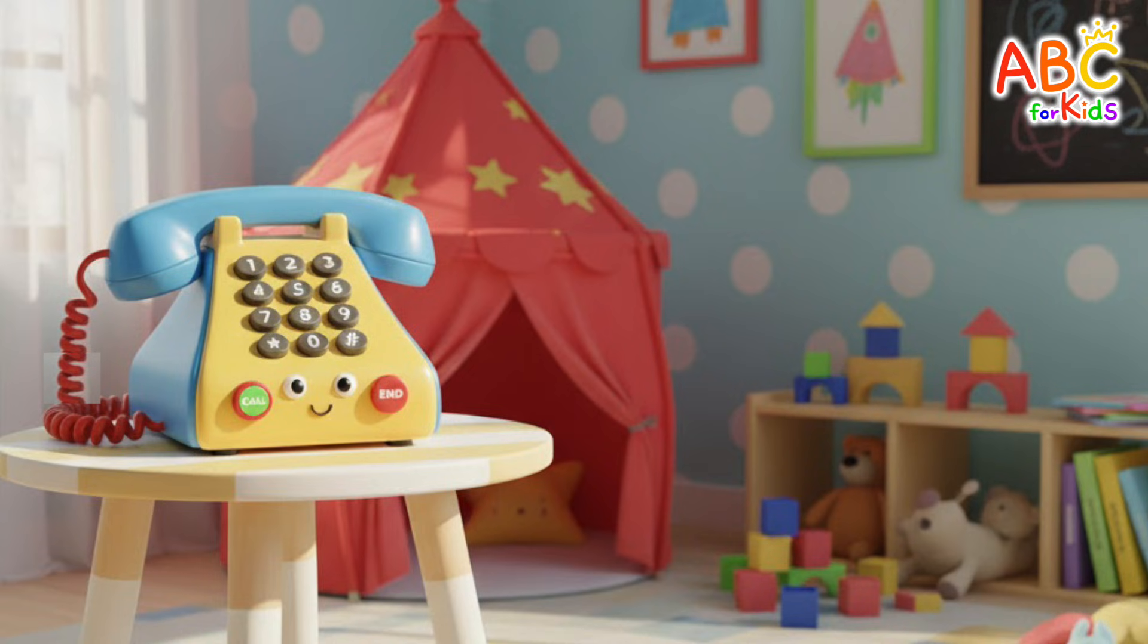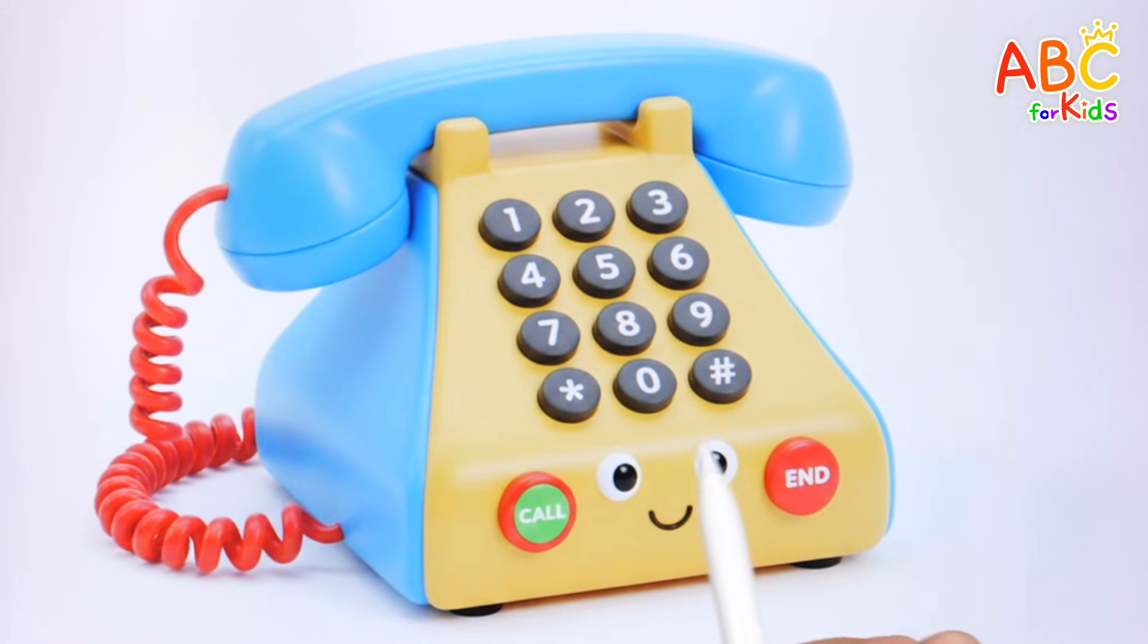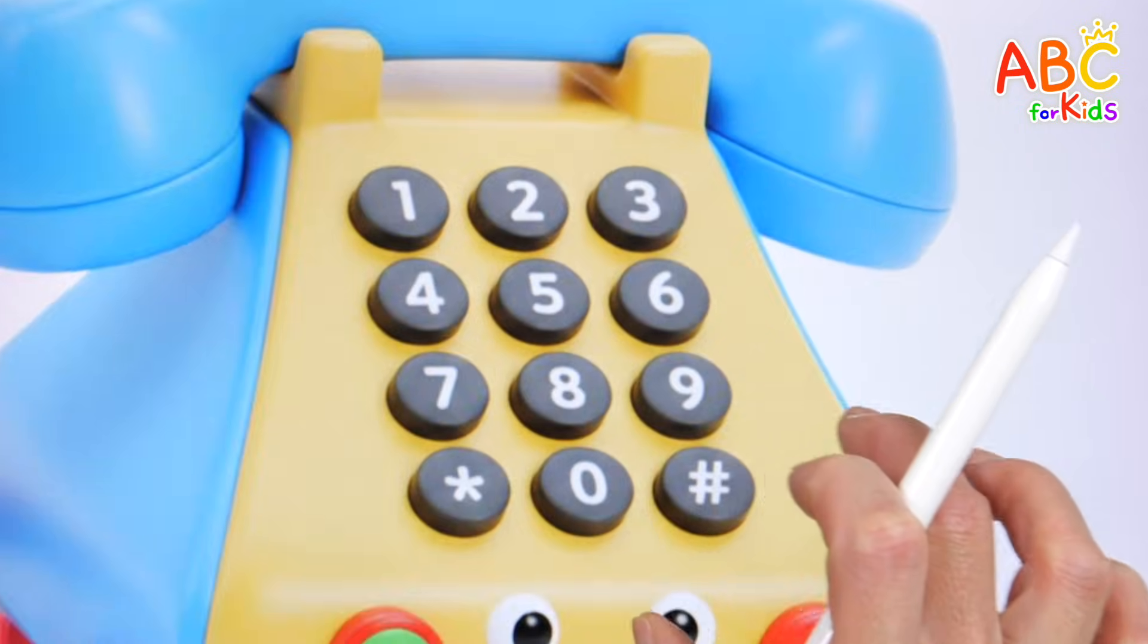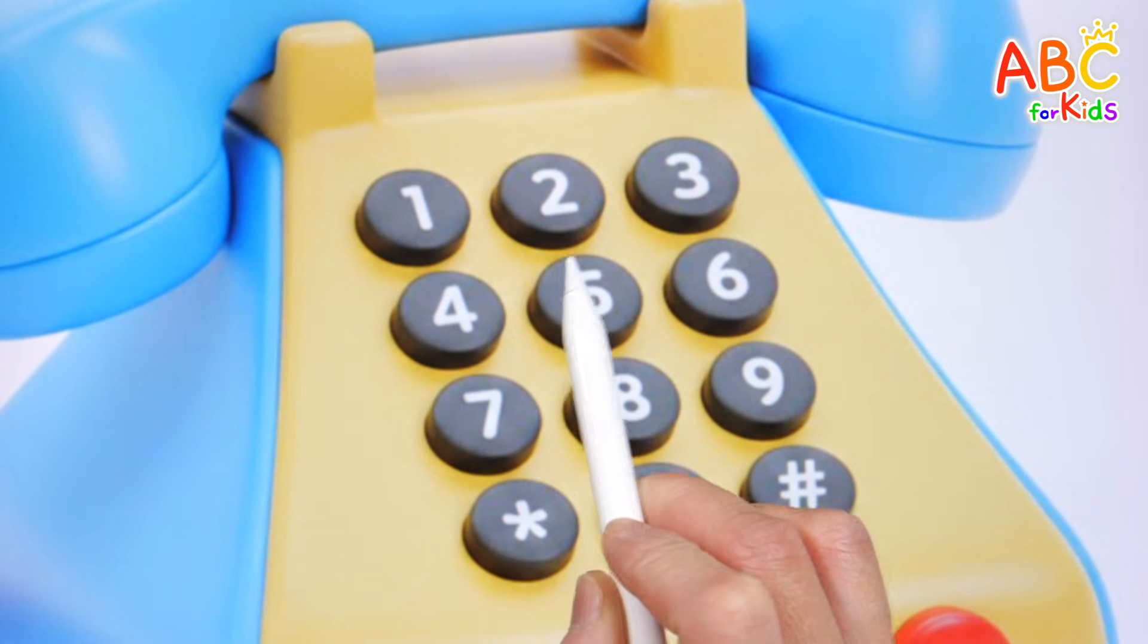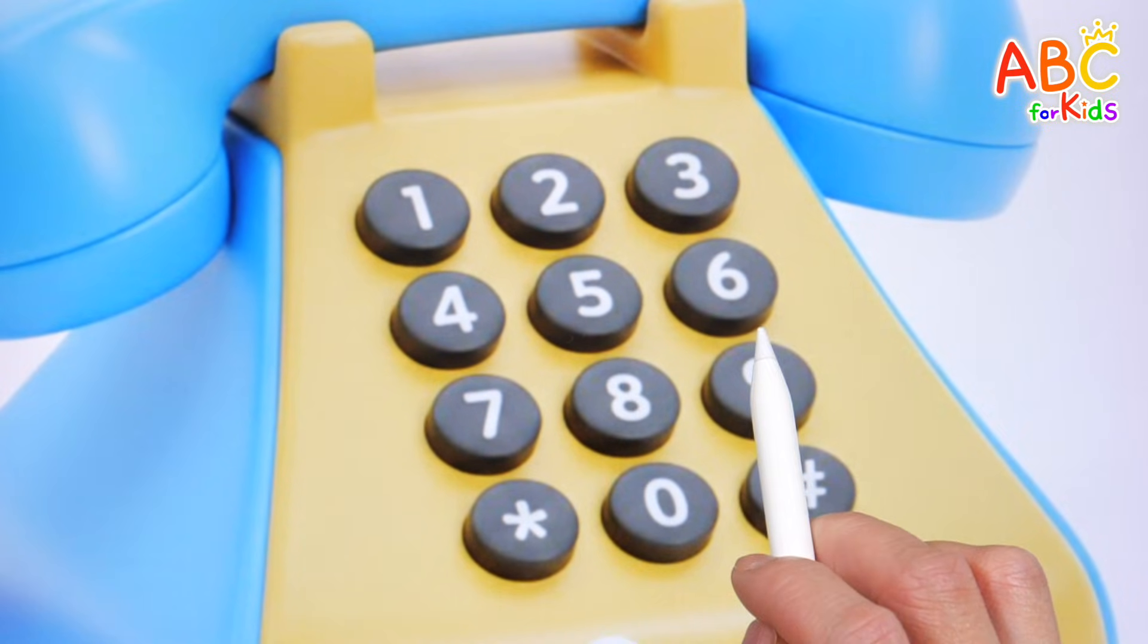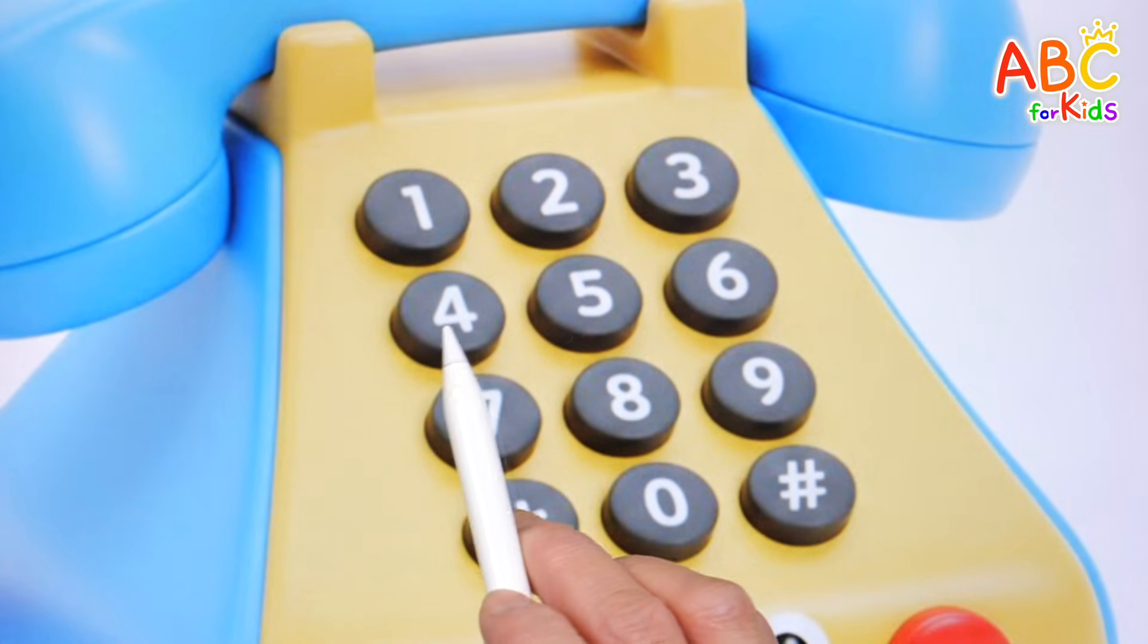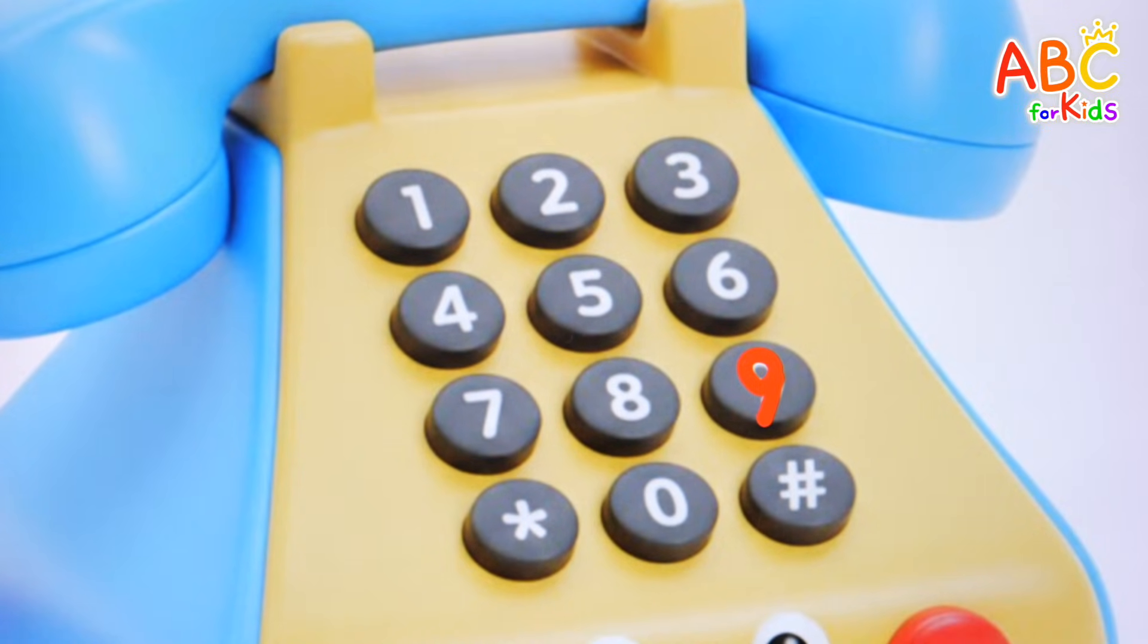There's a cute little phone in the playroom. Let's read the numbers on the phone one by one. One, two, three, four, five, six, seven, eight, nine, zero. Good job, everyone! Now let's find the number nine on the phone. Found it! Nine! Good job!